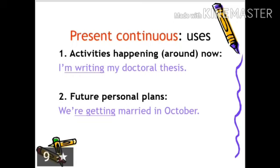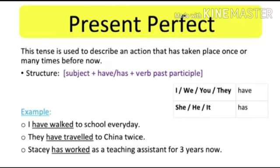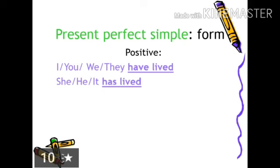Further, we will talk about present perfect tense. This tense is used to describe an action that has taken place once or many times before now. Structure: subject plus have/has plus verb past participle. For example: I have walked to school every day; they have traveled to the cinema twice; she has worked as a teaching assistant for three years. Remember: with I, you, we, they, we use have; with he, she, it, we use has.